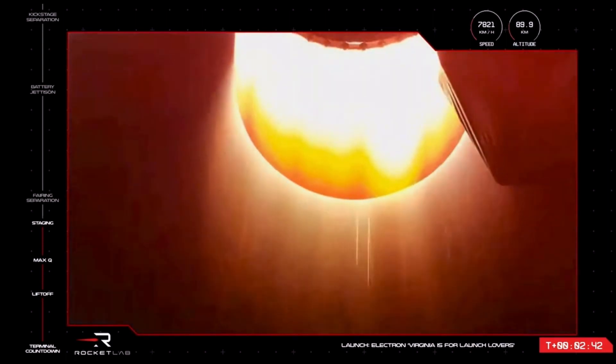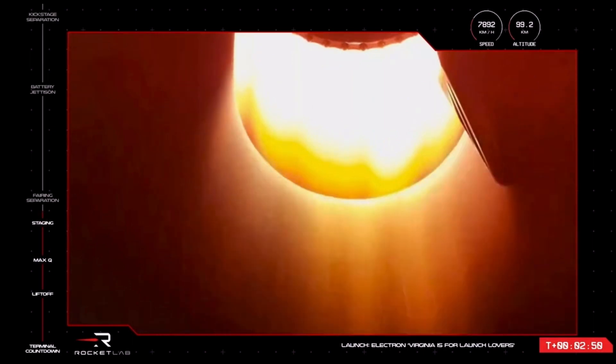Excellent news there from our launch operators. Electron has had a successful MECO, stage separation, and stage 2 ignition. The next milestone will be separation of the rocket's fairing. We do this to lose unnecessary weight once Electron is through the Earth's atmosphere.